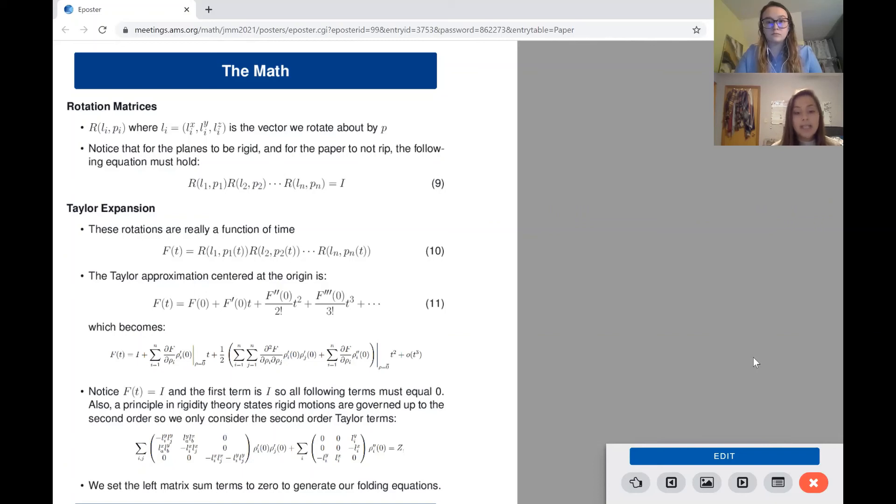In our equations, a is equal to the minimum of i and j, b is equal to the maximum of i and j, and p prime of 0 are our folding speeds. Notice that the two matrices in the second order term are complementary, so each position in the matrix must sum to 0. Setting the left matrix sum terms to 0 is how we end up generating our folding equations.